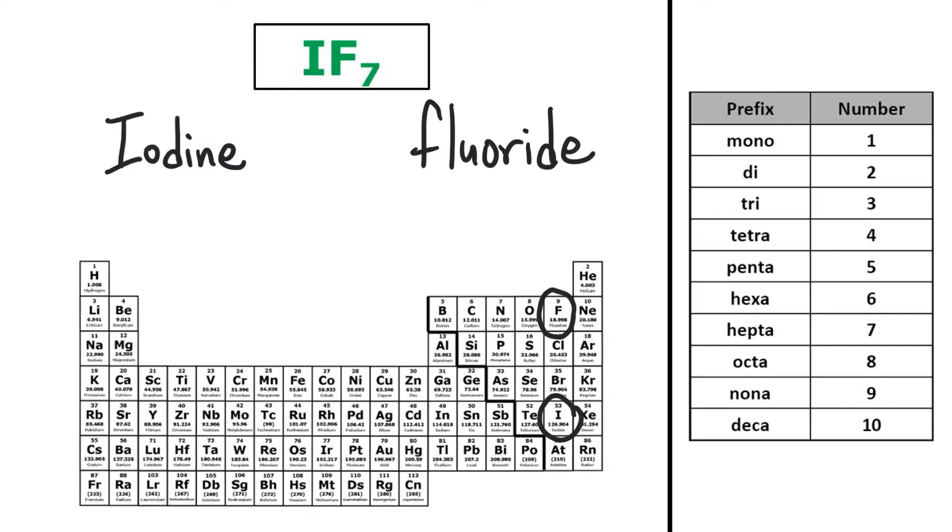Now because I only have one iodine, I actually do not use the prefix mono, because I don't use mono on the first non-metal. I can use it on the second one, but not on the first one. If I just write iodine, it means there's only one. So I won't use mono on iodine, but I do have seven fluorides, so I will use the prefix hepta, making the name of this compound iodine heptafluoride.